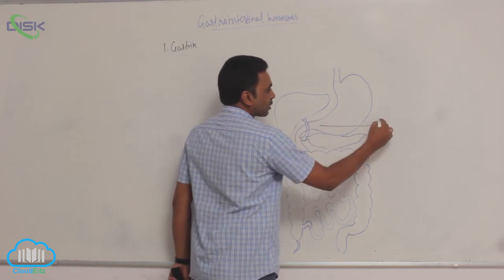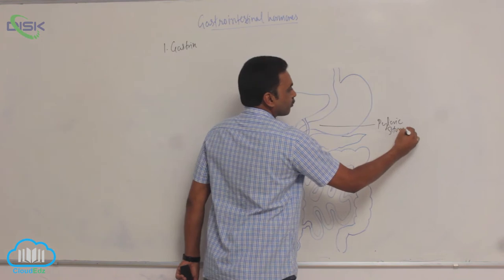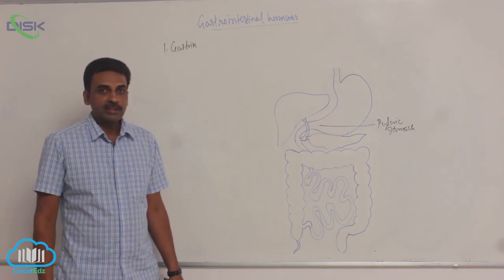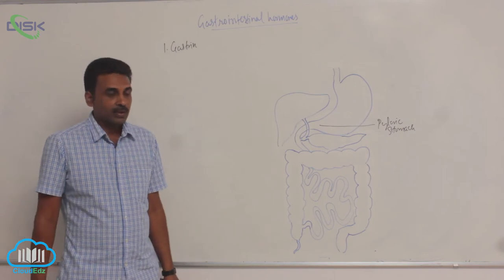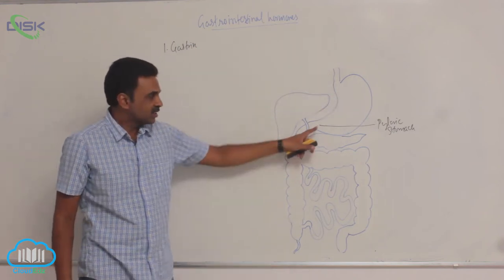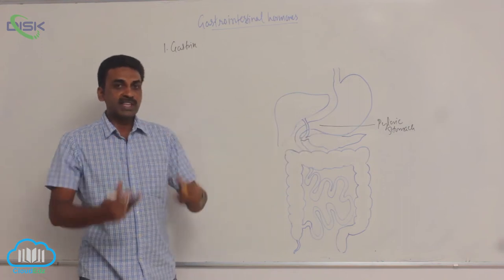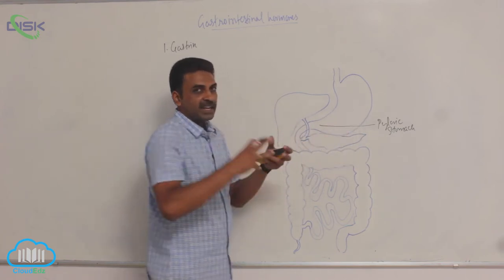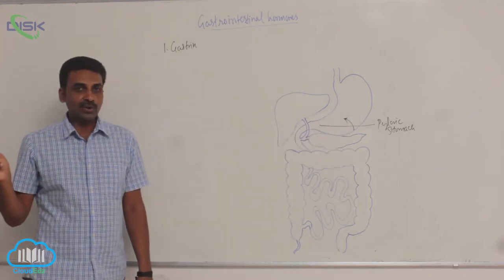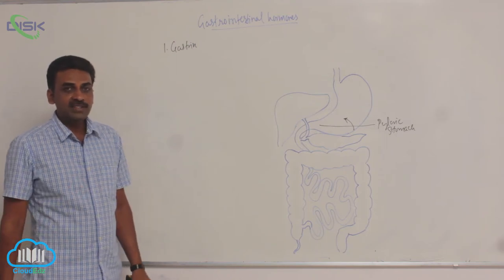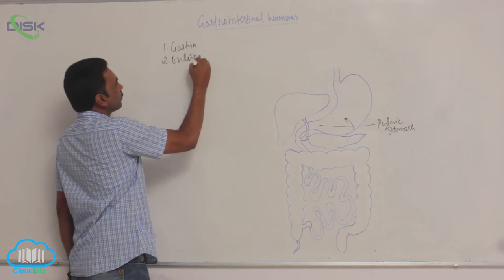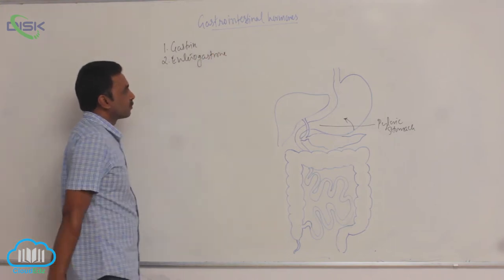The wall of the pyloric stomach contains G-cells, and the G-cells produce gastrin. Whenever food enters the stomach, the G-cells present in the pyloric stomach produce gastrin. The gastrin is released into the blood, and it comes and activates the gastric glands. The gastric glands then produce their secretions — pepsinogen and hydrochloric acid — which are stimulated by the gastrin hormone.